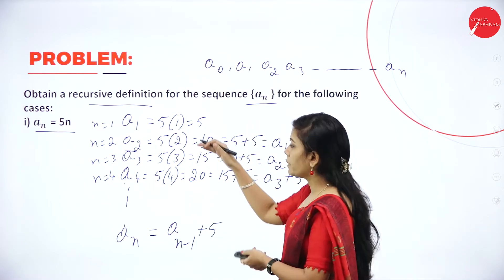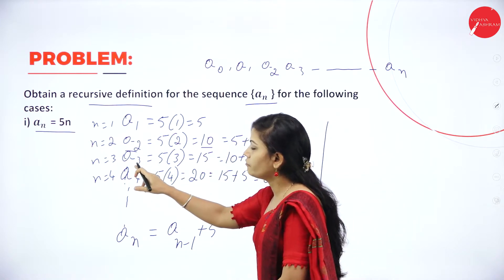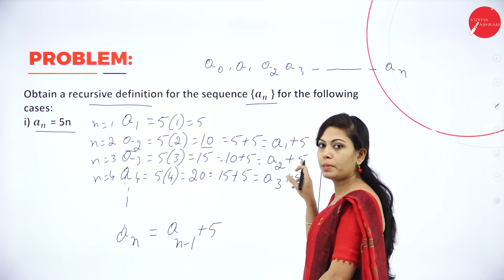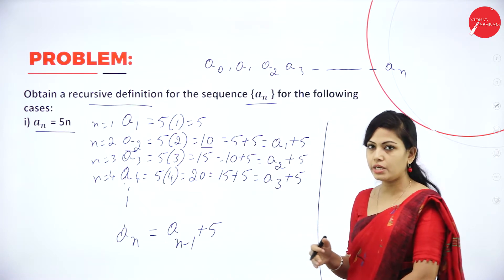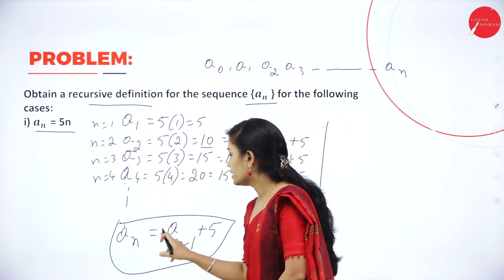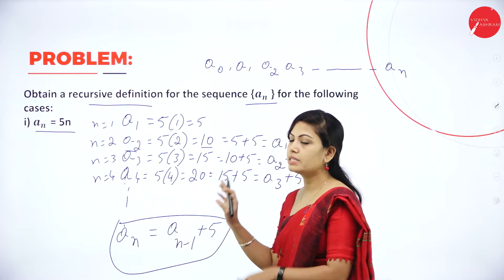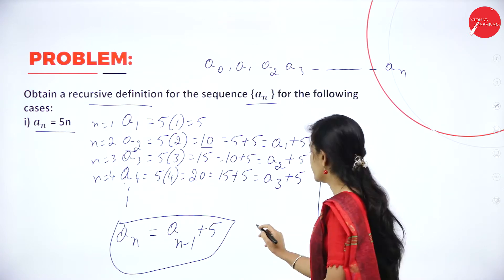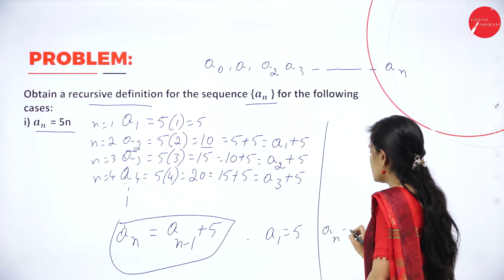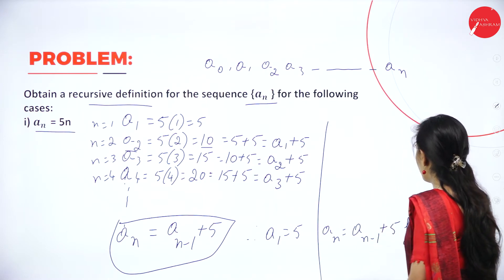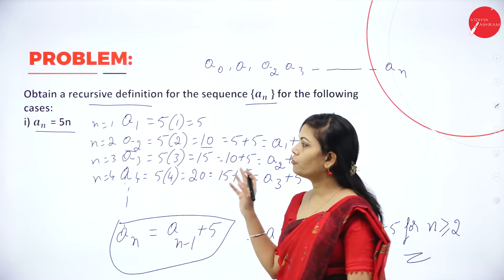The reason it is n minus 1 is because every time one value is reducing. For a₂ we get a₁, for a₃ we get a₂, and for a₄ we get a₃ — one value reduces each time. So finally aₙ = aₙ₋₁ + 5. Therefore: a₁ = 5 and aₙ = aₙ₋₁ + 5 for n greater than or equal to 2. This is the recursion method.